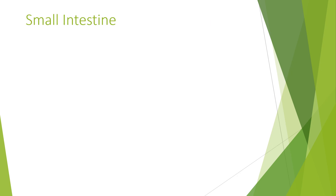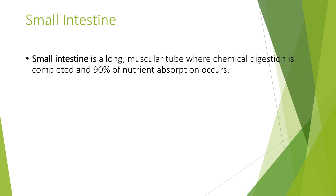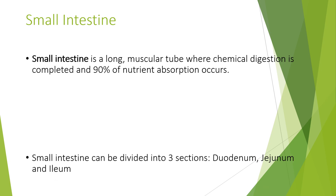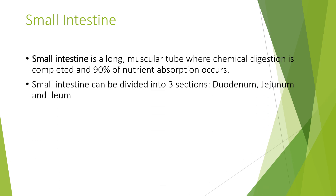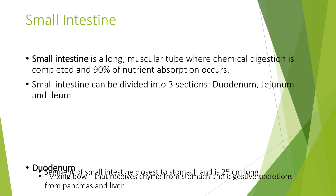Let's look at the small intestine now and the absorption of nutrients. The small intestine is a long muscular tube where chemical digestion is completed and 90% of nutrient absorption occurs. The small intestine can be divided into three sections: the duodenum, the jejunum, and the ileum.